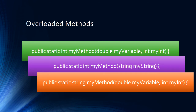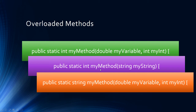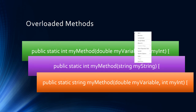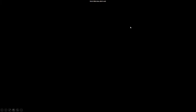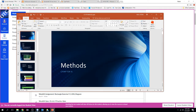We could declare the same method myMethod but have the parameter be a string called myString, with code that handles the data as a string. We could overload again and change the return value to a string instead of an integer, with code that returns a string value. Why might we want to overload? Maybe we want to give users the opportunity to search a checking account using an amount or an account number — running the same search but setting up the search key differently depending on whether it's a string or a double. This gives a huge amount of capability and is a big part of object-oriented programming.